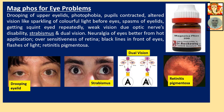Mag Phos for eye problems: drooping of upper eyelids, photophobia, pupils contracted, altered vision and sparkling of colourful lights before eyes, spasms of eyelid, squinting, weak vision due to optic nerve disability. Strabismus means when the two eyes are not properly lined up — one eye is in a different direction compared to the other. Dual vision means seeing a particular object twice, either side by side or one above the other. Neuralgia of eyes better from hot application, oversensitivity of the retina, black lines in front of the eyes, flashes of lights, and retinitis pigmentosa — a very serious disease where the retina gets completely damaged, and the patient may ultimately suffer complete blindness.